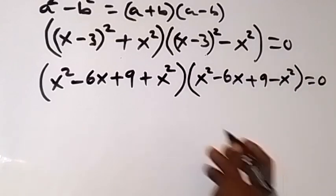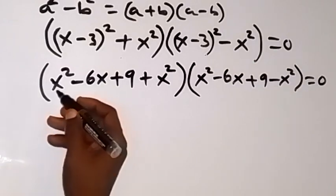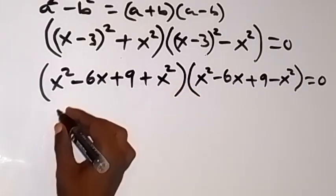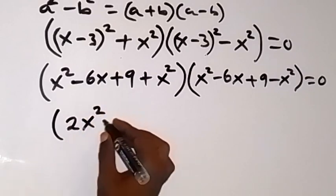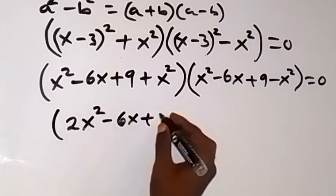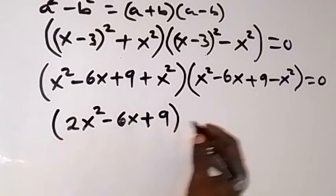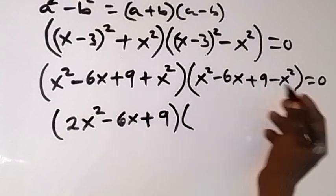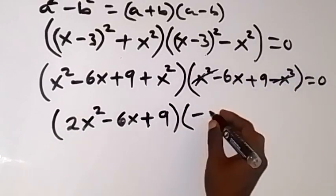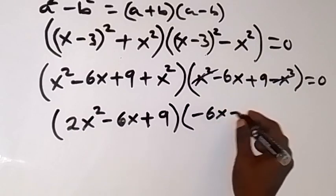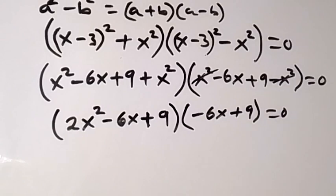From there we can simplify further. In the first bracket, x squared plus x squared gives us 2x squared, minus 6x plus 9. In the second bracket, x squared minus x squared cancels out, leaving minus 6x plus 9, which equals 0.